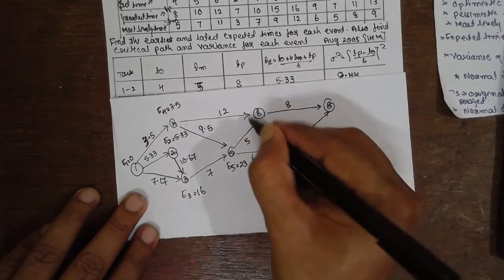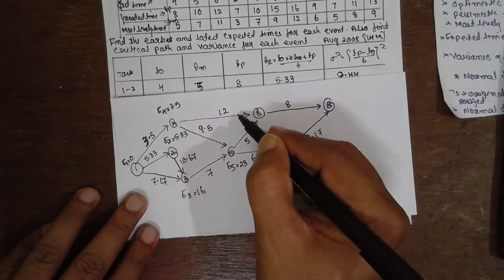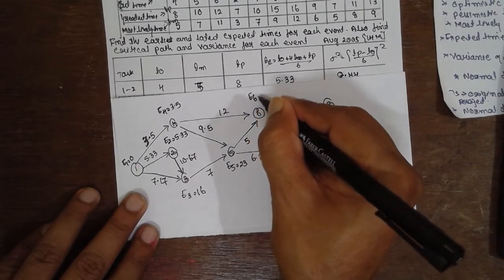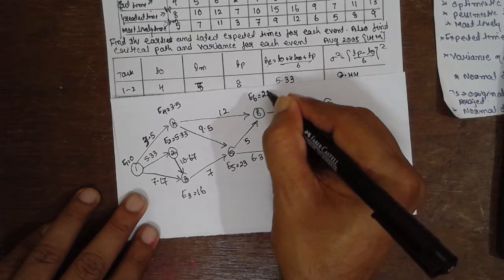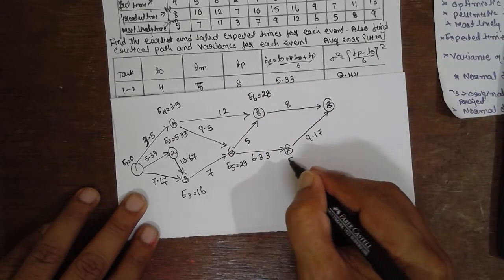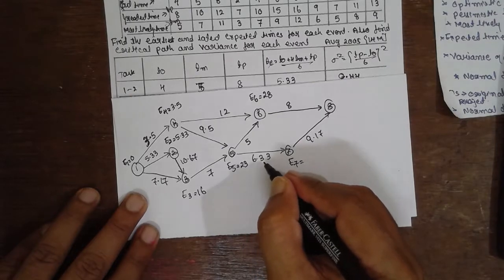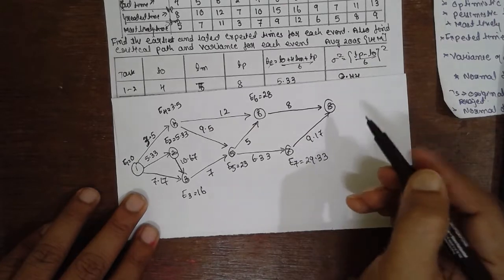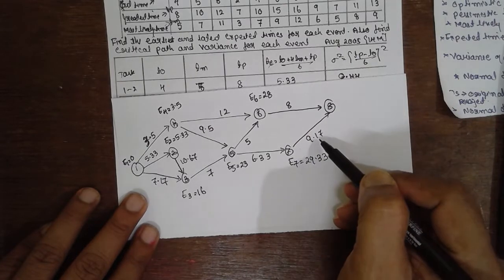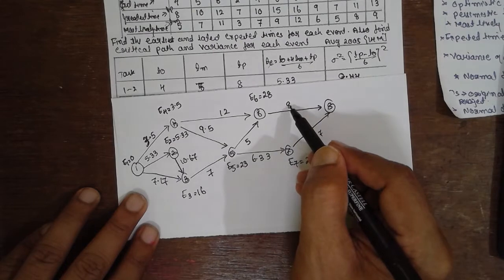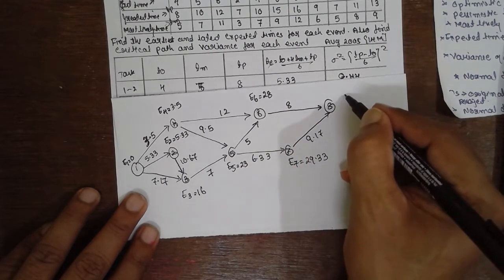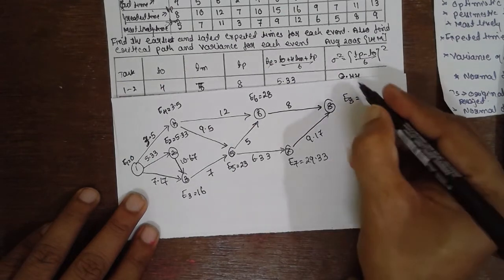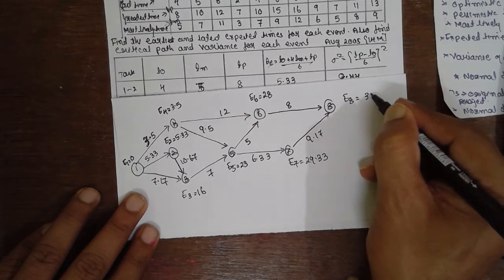For E6, there is a junction: 3.5 + 12 = 15.5 or 23 + 5 = 28 — select larger, so E6 = 28. E7 has no junction: 23 + 6.33 = 29.33. For E8: 29.33 + 9.17 = 38.5 or 28 + 8 — select larger, so E8 = 38.5. When moving left to right, always select the larger value.